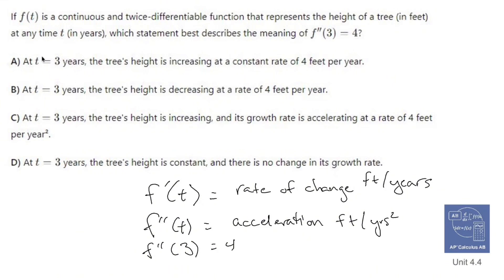Okay. So let's see what our options are. At time t equals 3, the tree's height is increasing at a constant rate of 4 feet per year. No, there's nothing constant about that. That's not true. That's talking about f prime of t, not what I want. At t equals 3 years, the tree's height is decreasing. Nope, cause it's positive. That's not even an option.